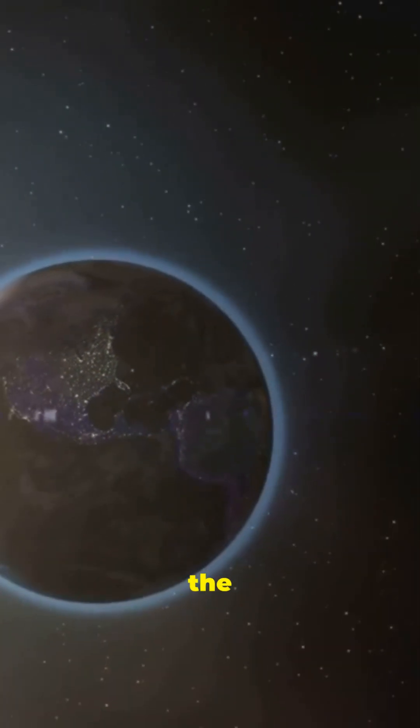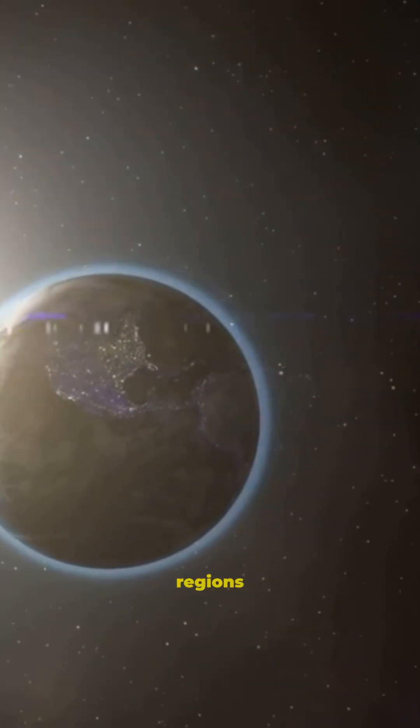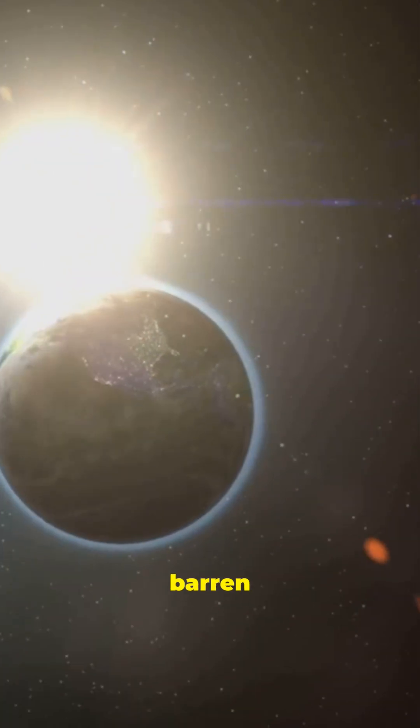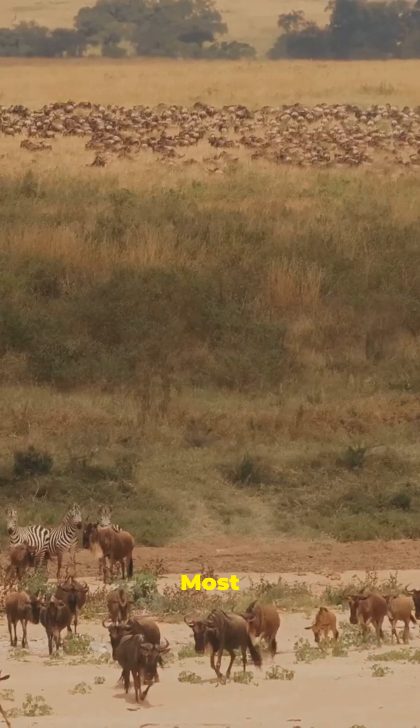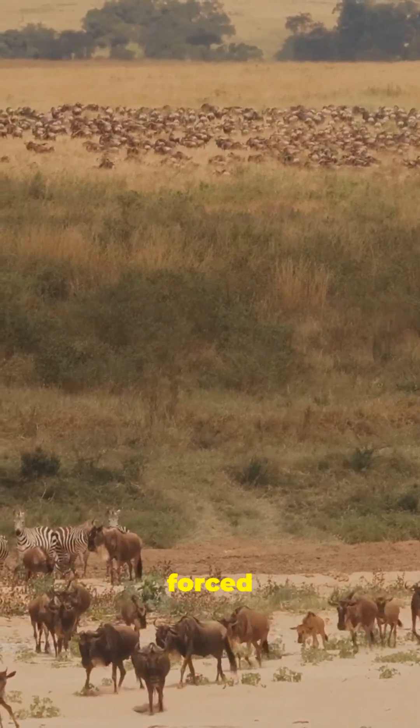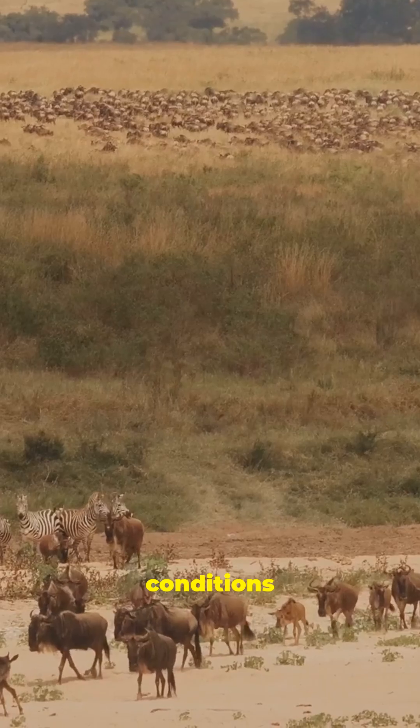oceans would migrate toward the poles, turning equatorial regions into vast, barren deserts. Most life would die, or be forced to migrate, as conditions become inhospitable.